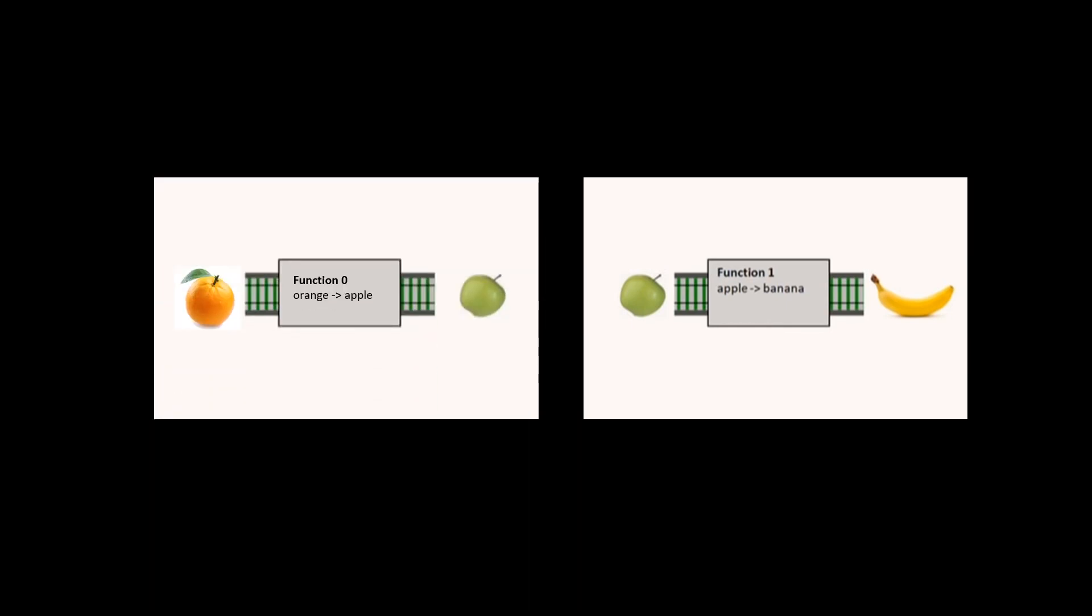But a contravariant functor is basically the following: instead of composing things at the back, you're composing things at the front. So where we were composing a banana to a cherry function with an apple to a banana for a contravariant, we want to basically do the opposite thing. We want to compose something at the front.